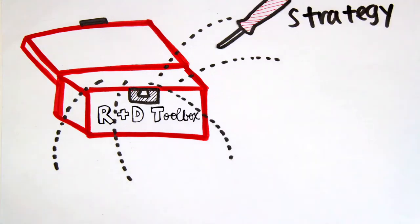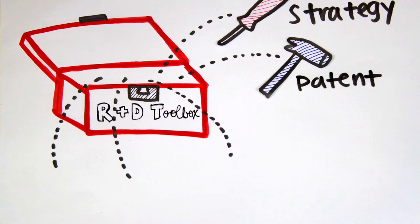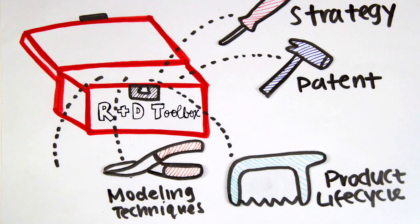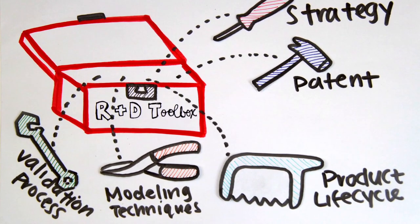It contains five key resources: a go-to-market strategy, a patent strategy, a lifecycle overview, a comparison of several modeling techniques, and a model validation process.